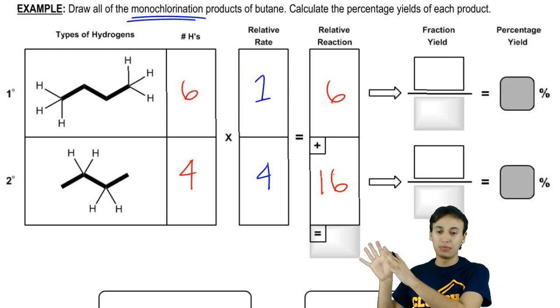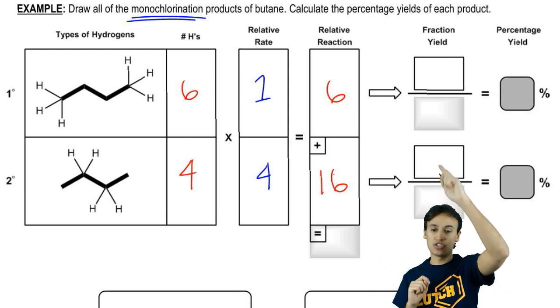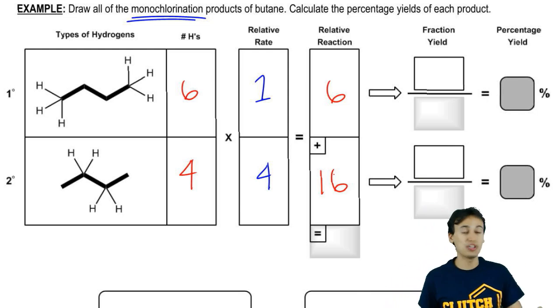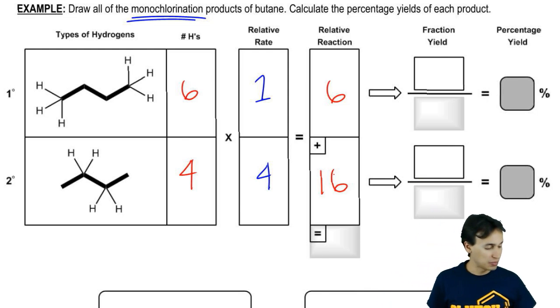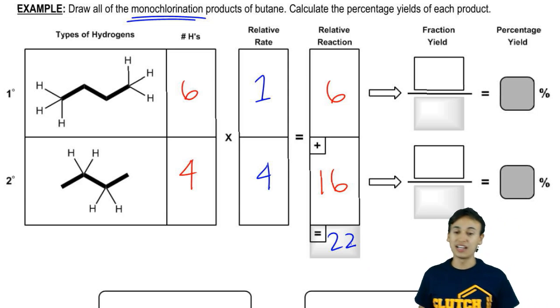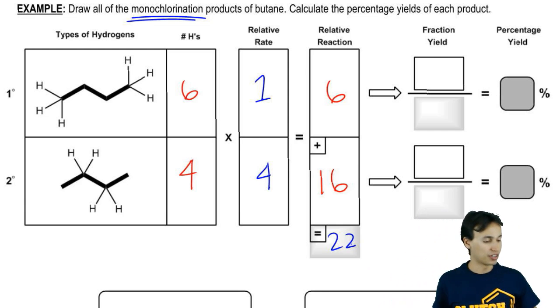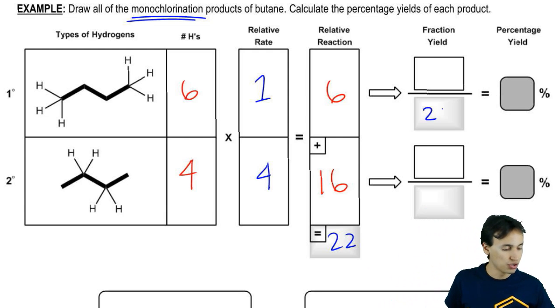So that means I'm getting this, that ratio that you see, six over 16, that's going to be the final answer. But I need to put this in a percentage yield way. So the way we do that is we add up these two numbers. That means that the sum of these two numbers is 22. And that's going to be the number that I put in my denominator. So I'm going to put 22 as the bottom of my fraction for each one.